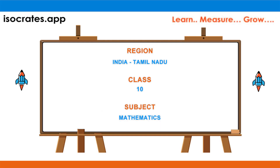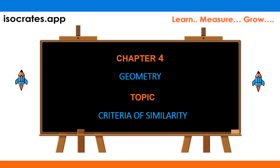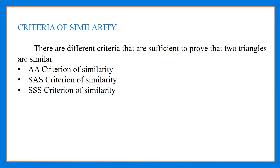Welcome to isocrats.app channel, a platform where you learn, measure, and grow. In this video we will show a quick and simple way to solve the question. We all know what similarity is — two figures are similar only if they change in size but not in shape. Their sizes can be proportional but their shape has to be the same.